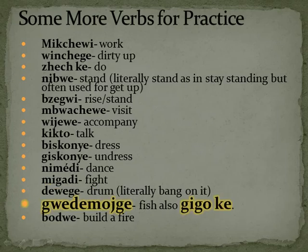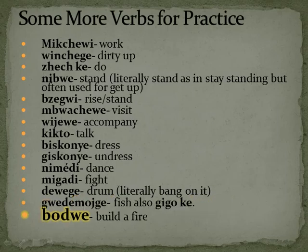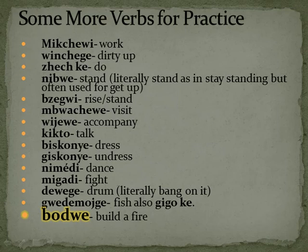Kwedemochke — to fish; some communities also use gigoke — that K indicates you do something with fish. Some will even drop the gwe off and just say demochke. So: kwedemochke, demochke, or gigoke. Boudwe — to build a fire. You've got a group of verbs here to practice. I suggest making note cards and quizzing yourself — like nemikchwee, gamikchwee, mikchwee, nemikchwee-man, gamikchwee-man. Try it with different verbs, like migadi — to fight: nemigadi, gamigadi, migadi. Don't forget some people put wek on there, or wamigadi.